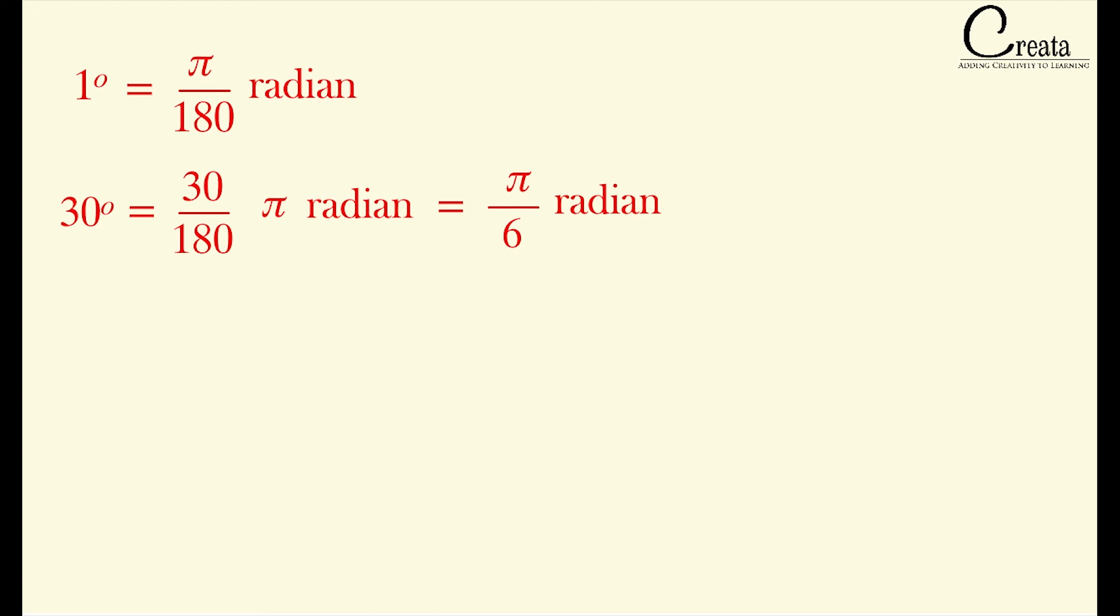Next angle, let's check 45 degree. Let's convert it to the radian form pi by 180 into 45. So it comes out to be pi by 4 radian. 45 degree is pi by 4 radians.